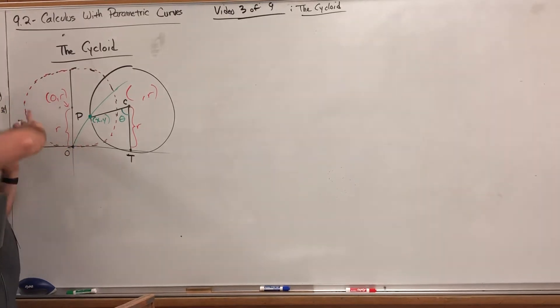Then we make a mark of where a point is, namely the point where it's on the ground before it starts rolling. Then we start rolling it. The question we're going to attempt to answer is: what is the path of this point on the ground as we roll?